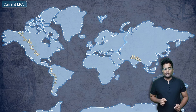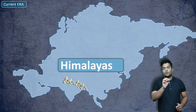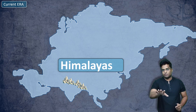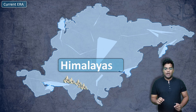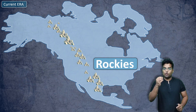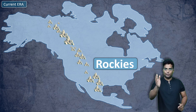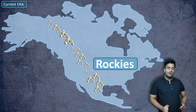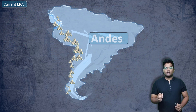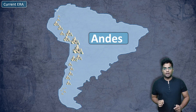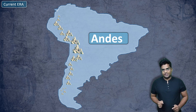So let's explore. As you can see, these are the fold mountains of Asia called the Himalayas — it's between India and Nepal. And these are the Rockies, which are the fold mountains in Northern America. It pretty much acts like a spine; it runs down the whole of the North American continent. Similarly, these are the fold mountains of Southern America called the Andes.